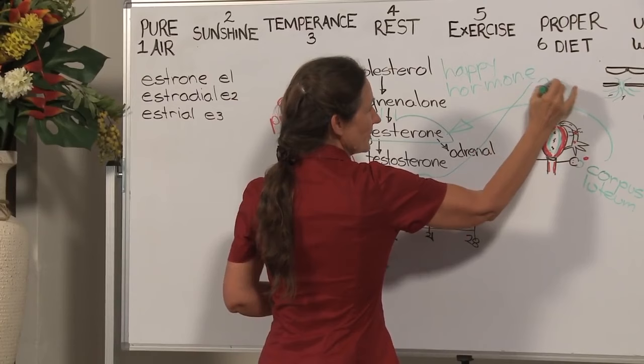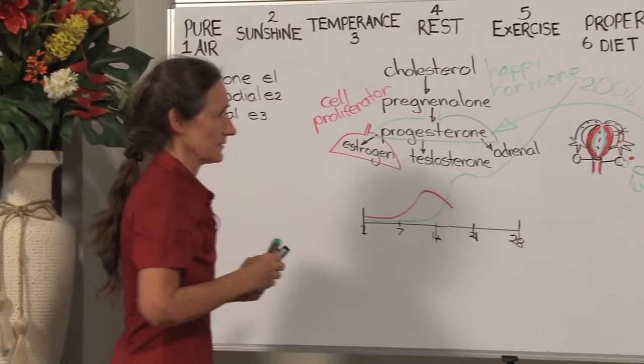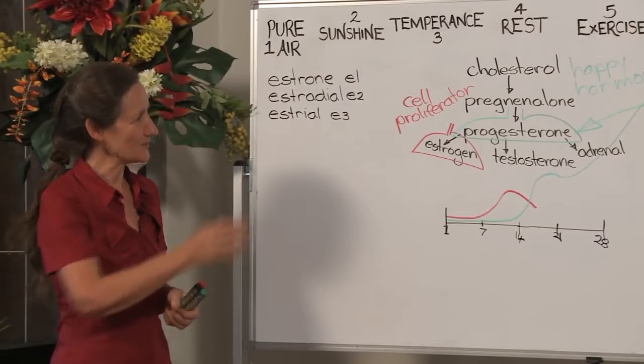What happens with the conception of a new human being? Progesterone levels soar 200%. No wonder we often say when a woman's pregnant, she's just blossoming. That's because her happy hormone levels are nice and high.